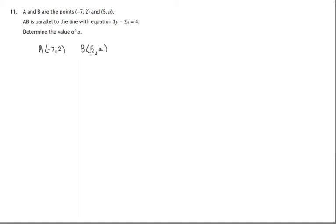We don't know what the y-coordinate of point B is, but what we are told is that this line, wherever A and B are, that this line AB is parallel to this other line 3y - 2x = 4.